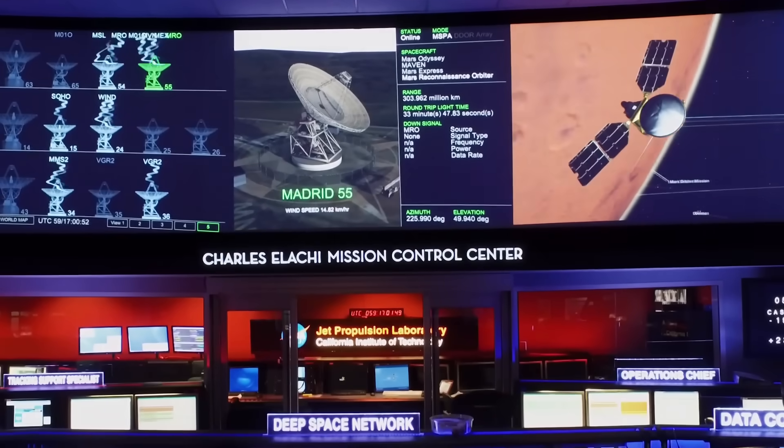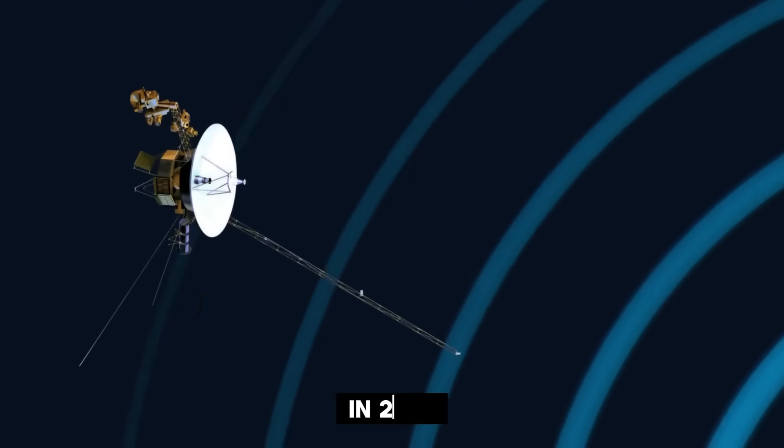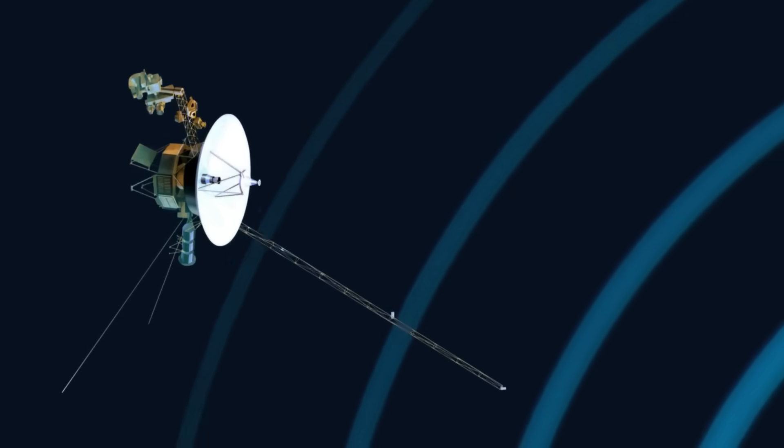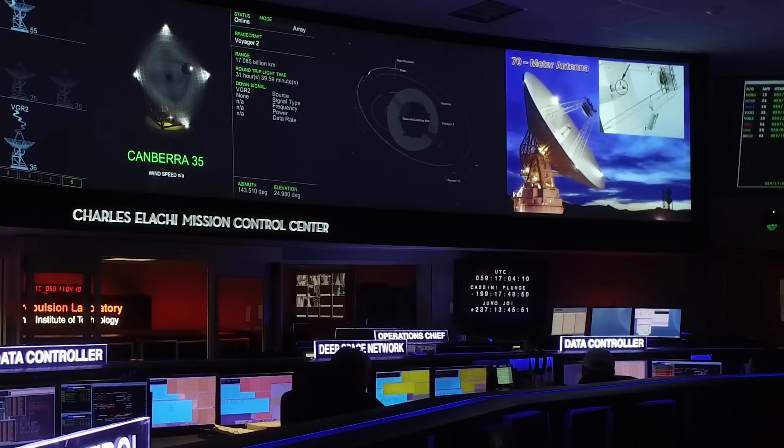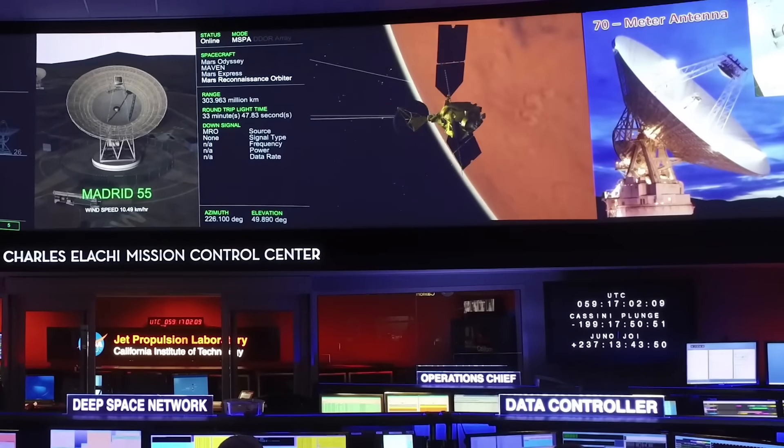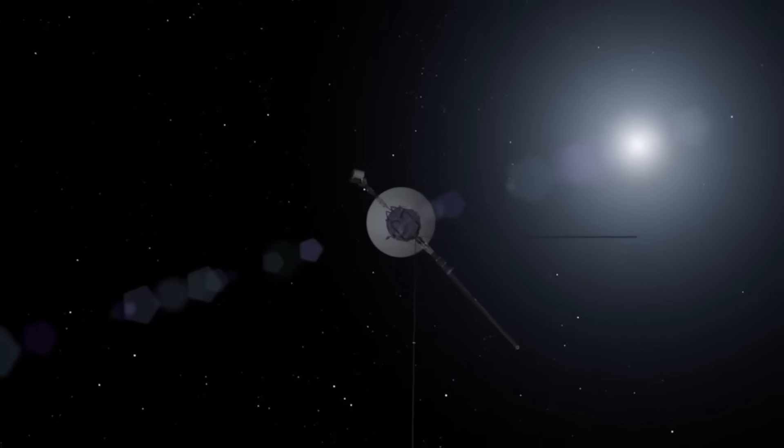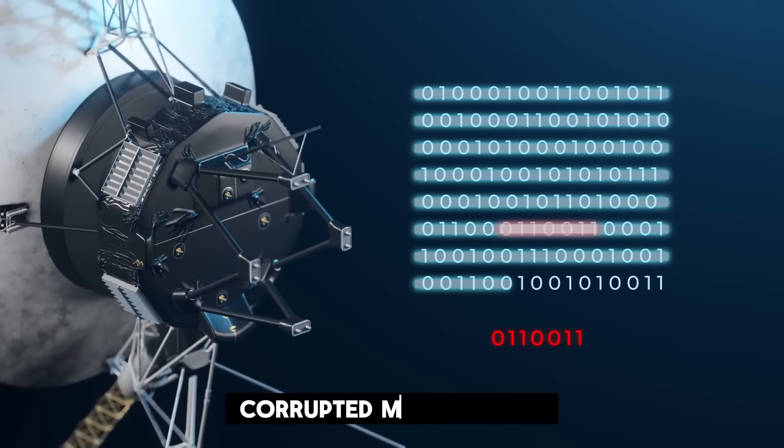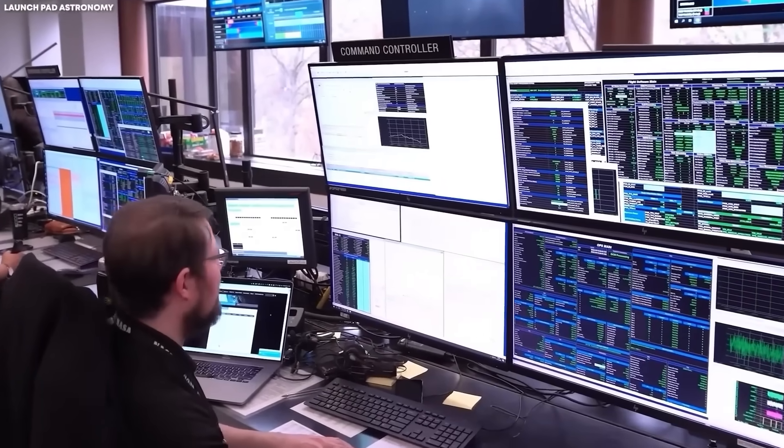And what they contain might force us to question everything we thought we knew about interstellar space. The strange new clues: Voyager 1's latest troubles began in 2022, when its attitude control system started sending back completely garbled telemetry. Engineers traced this to a computer fault. The spacecraft had inexplicably begun routing data through a component unused for years. Then, in late 2023, things got stranger. For almost seven months, Voyager transmitted nothing but gibberish data. NASA eventually blamed a corrupted memory chip, but not before receiving months of unintelligible signals from interstellar space.